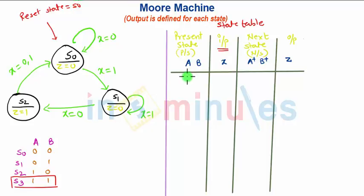So for S0, S0 corresponds to AB 00. When X is equal to 0, it will remain in that state. Therefore next state will be again 00 and output will be 0. Why? Because the output is associated with the state and the state is S0. So for S0, output is Z0 as seen in the state diagram.